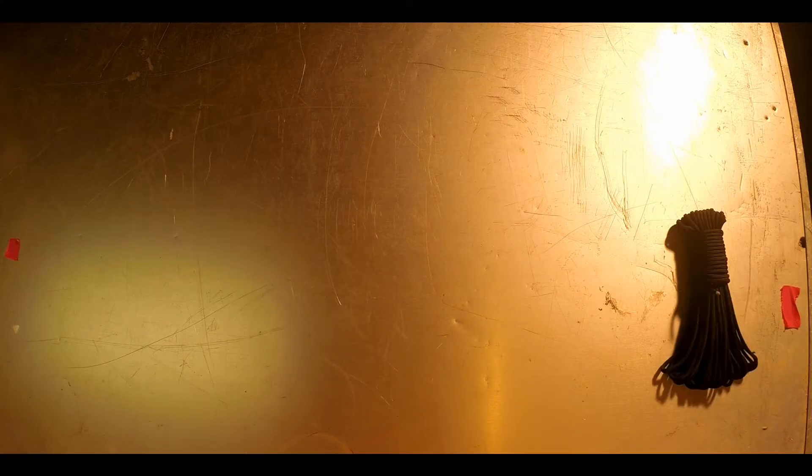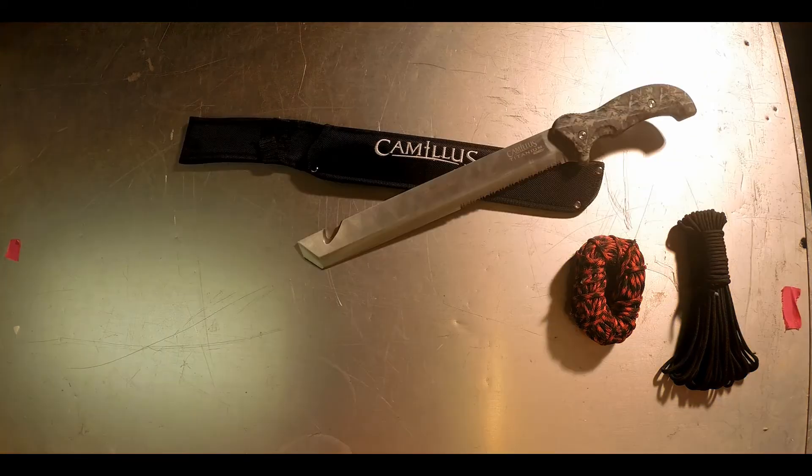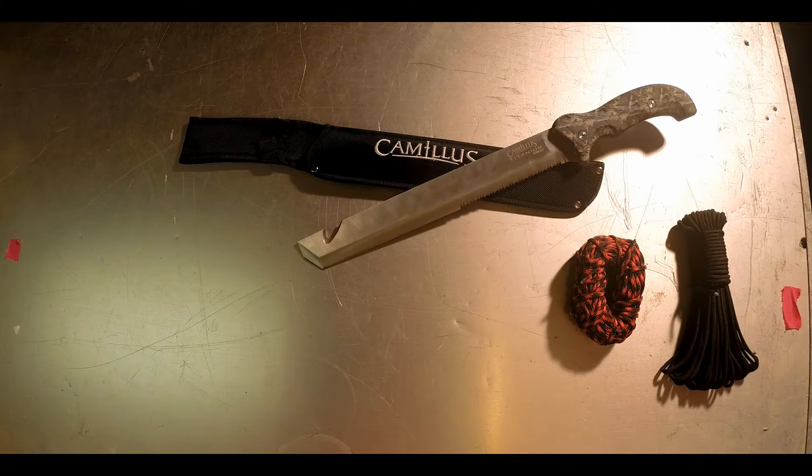To begin, we're going to start off with a large, flat work surface. We're going to need some 550 black paracord for the handle, and we decided to use some red and black 80 paracord for style. Of course, the star of today's show, the Camillus Carnivore, should be close by.